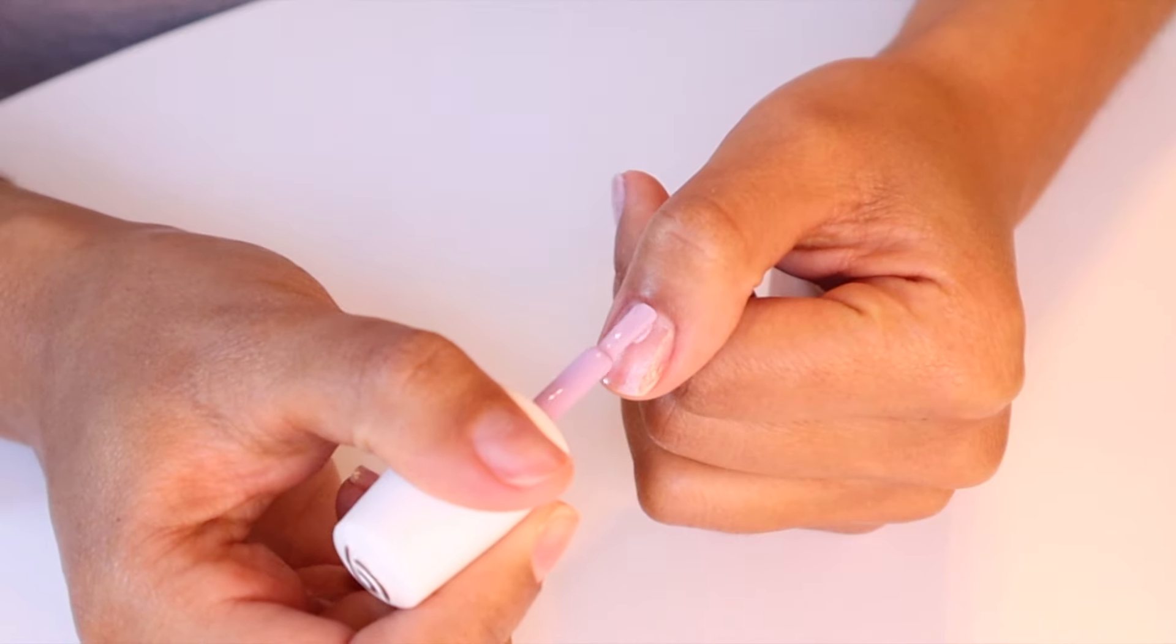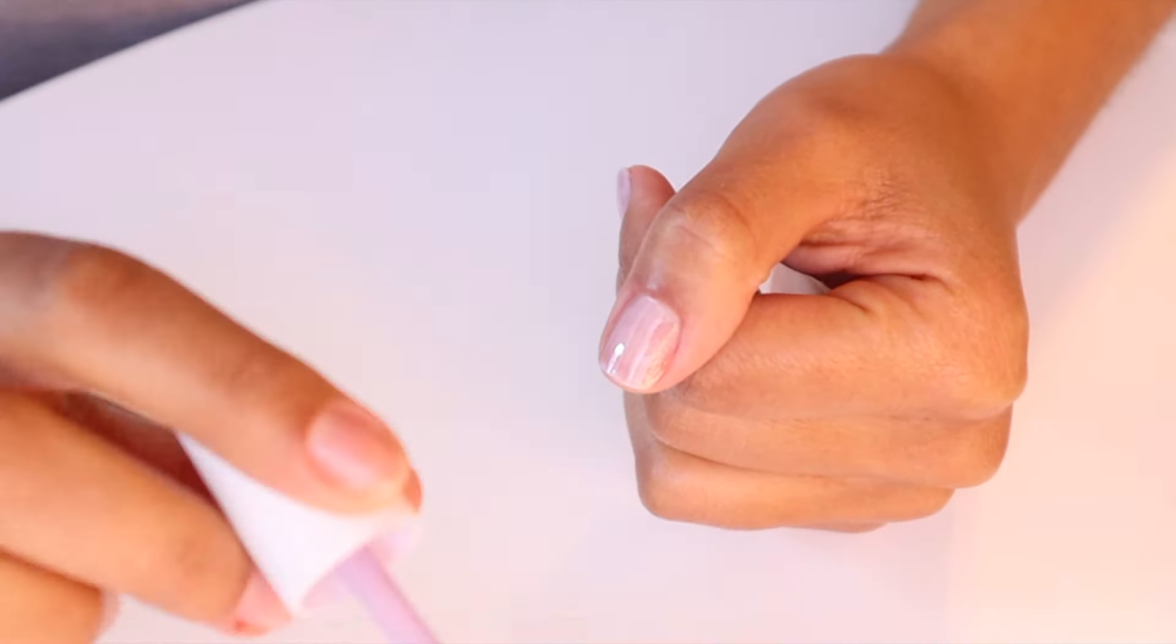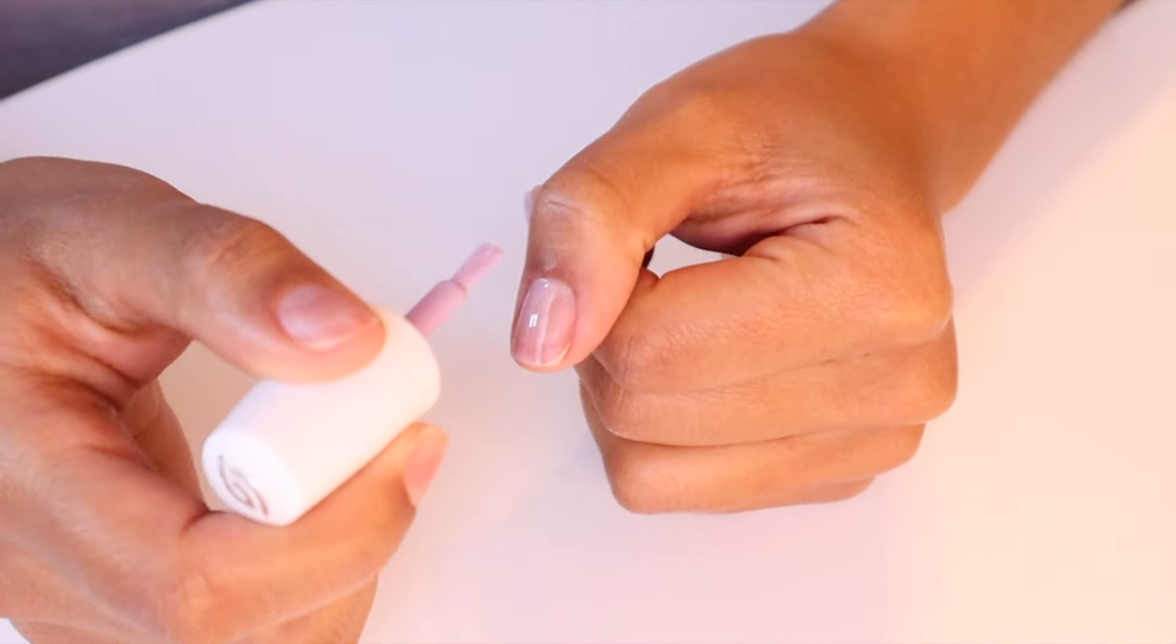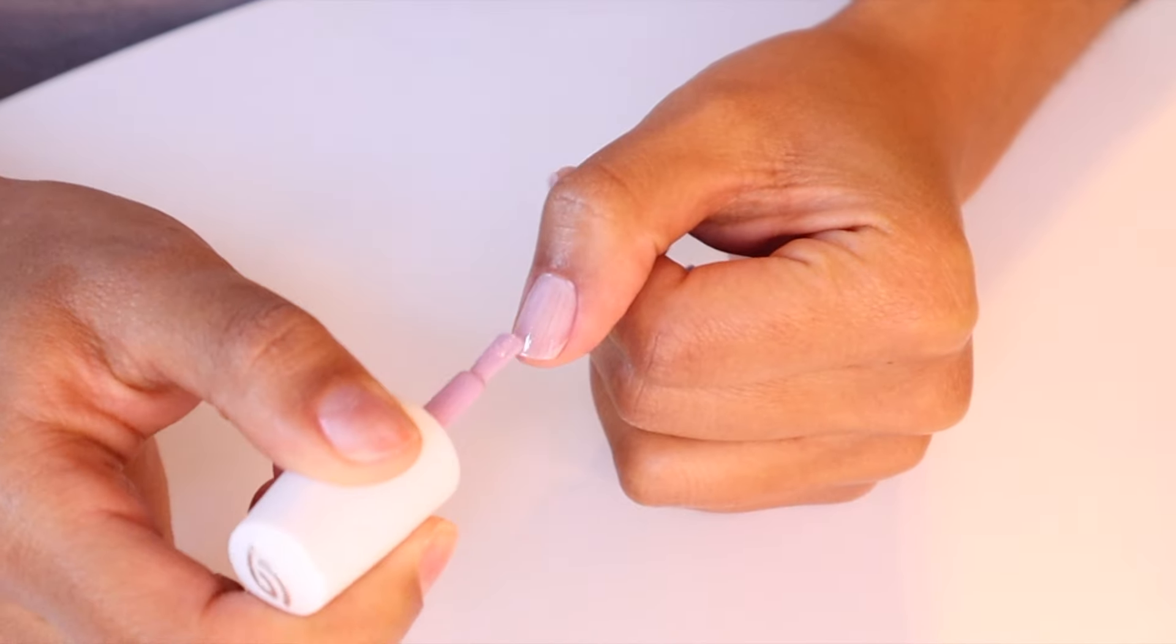If you're wondering why I'm not using a base coat, it's because quite frankly I just ran out. It's not necessary if you're using a light color like this one. One of the primary purposes of the base coat is to protect your nail from staining and also make your nails look thicker.